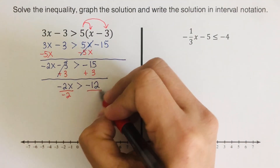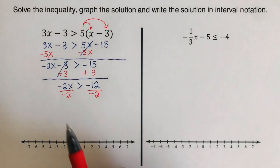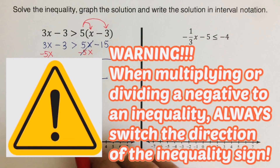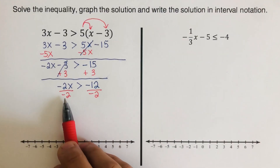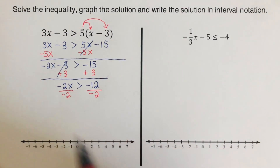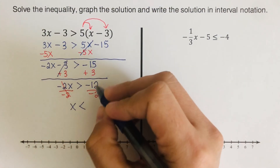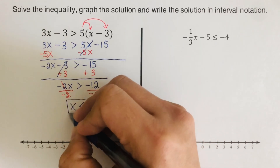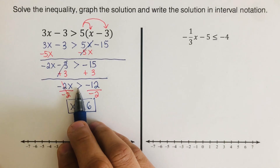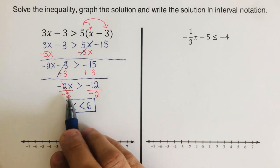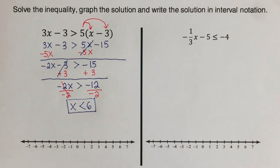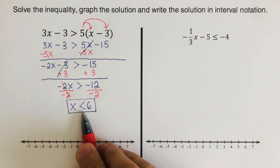Now we divide both sides by negative 2. Please remember this: when multiplying or dividing by a negative in an inequality, always switch the direction of the inequality sign. So since we are dividing by negative 2, we switch the inequality sign. The left side gives us x is less than, and that's going to be 6. Again, we always switch the direction of the inequality symbol once we divide or multiply by a negative.